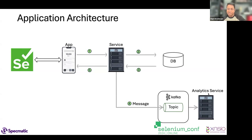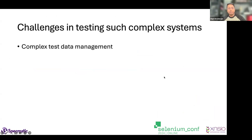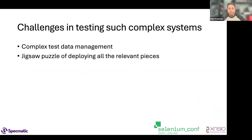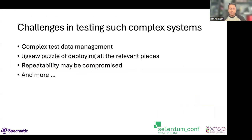Yes — connecting to Kafka if it's in a private subnet, difficulty in integration tests, real-time events, third-party services being down — it's integration hell all the way. Data integrity testing, Kafka synchronization problems, the database connection issue. The issues we primarily faced were complex test data management — having to prime the data ahead of time, database size difficulties — and the jigsaw puzzle of getting all these pieces deployed and then writing a test against it. The repeatability of the test itself is compromised.